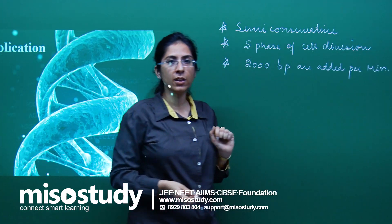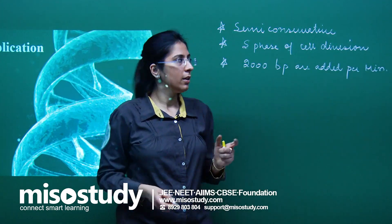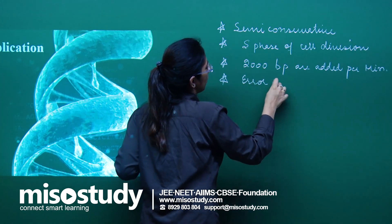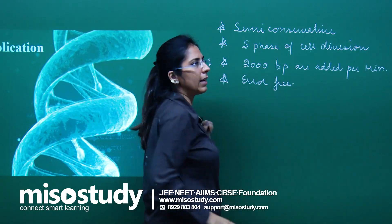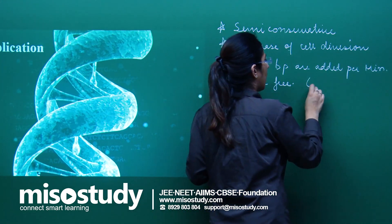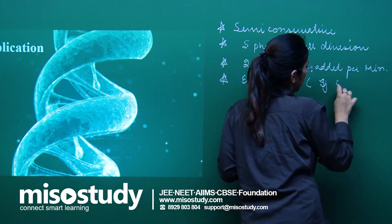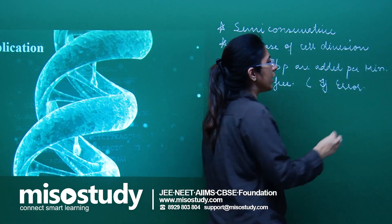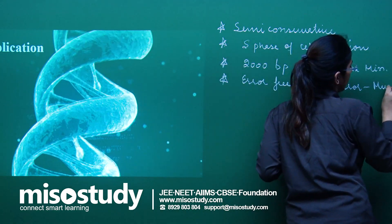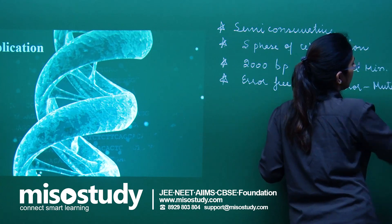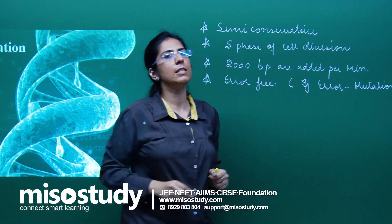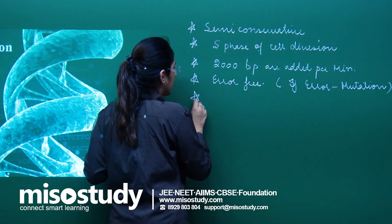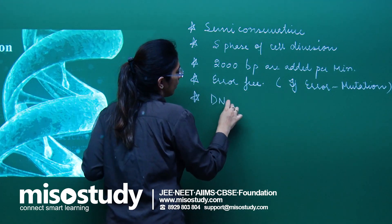The whole process of replication is very fast and error-free. If errors do occur, it causes mutation. There is one principal enzyme present which helps in DNA replication, and the name of that enzyme is DNA polymerase.